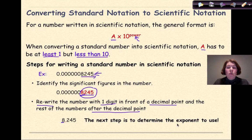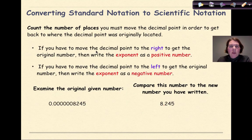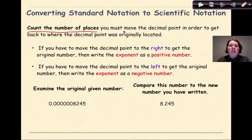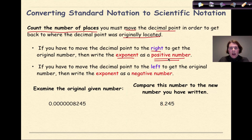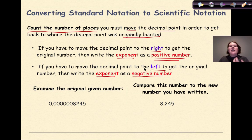The next step is to determine the exponent to use. We count the number of places we must move the decimal point to get back to where it was originally located. If you have to move the decimal point to the right to get to the original number, write the exponent as a positive number, because you have a number greater than one. If you have to move the decimal point to the left to get the original number, write the exponent as a negative number, because that number is less than one.